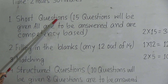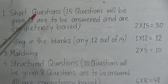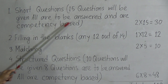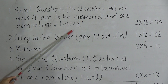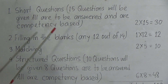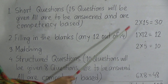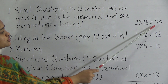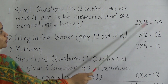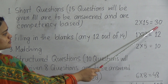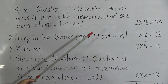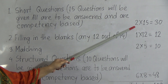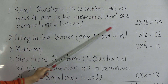Number 1 is short questions. You will be given 15 short questions and all are to be answered — there are no extra questions to choose from. Each question carries 2 marks, so the total for short questions will be 30 marks. All of these questions are competency-based.